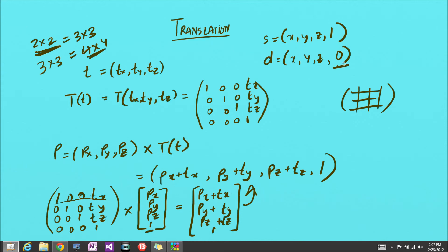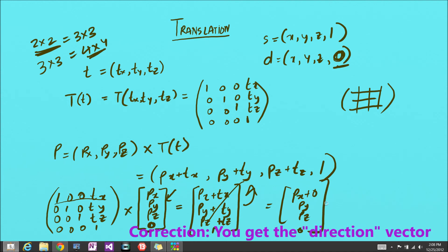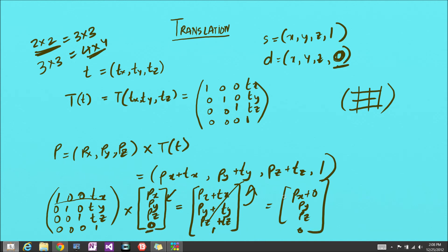Now let's prove why a direction vector cannot be translated. A direction vector has a 0 in the last coordinate, so when multiplied by the translation matrix, the result is Px plus 0, Py plus 0, Pz plus 0, and 0. Hence, if you try to translate a direction vector, you just get the direction vector back unchanged, because there are no specific coordinates where the direction vector exists — it only represents a direction.